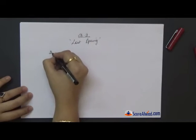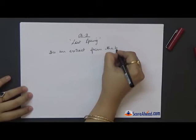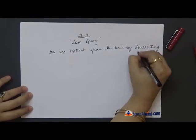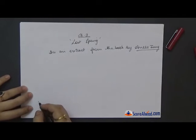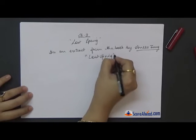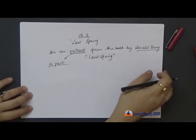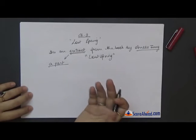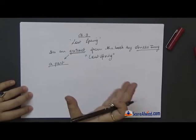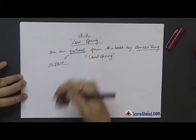This chapter is an extract from the book by the author Anees Jung, and the name of the book is also 'Lost Spring.' An extract means a small portion — it is only a part. The whole book deals with many stories, and out of that, in this chapter you have two small stories under the title 'Lost Spring.'